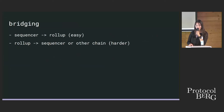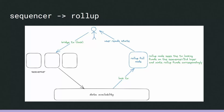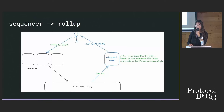How would bridging work with a shared sequencer? Going from sequencer to rollup is easy — assuming the sequencer chain has its own token, the user submits a lock transaction to the sequencer, the sequencer publishes this, and the rollup full node reads this transaction format, identifies it, adds it to the state machine, and then mints funds correspondingly. That's basically it. Going from rollup back to another chain is a bit more complicated.